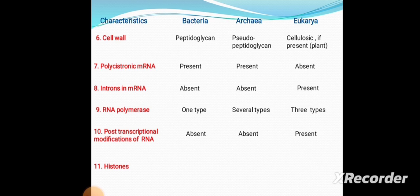Eleventh is histone. Histone is absent in Bacteria, but it is present in both Archaea and Eukaryotes.